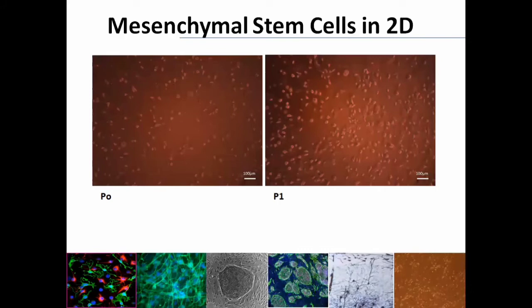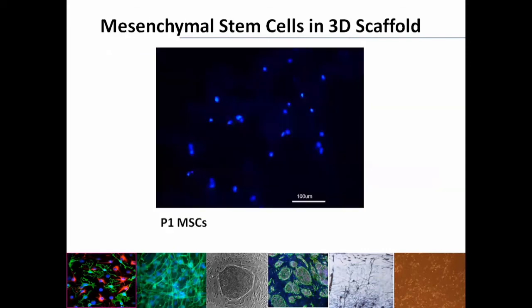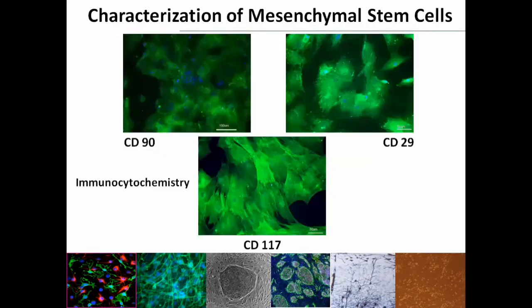Mesenchymal stem cells in 2D culture showed fibroblast-like morphology in passage 0 and passage 1. Cell distribution is an important phenomenon in cell differentiation. The 3D collagen scaffold showed homogenous mesenchymal stem cell distribution after 21 days of treatment.